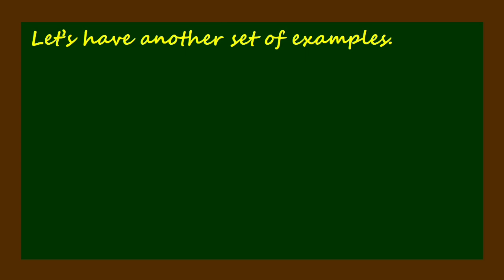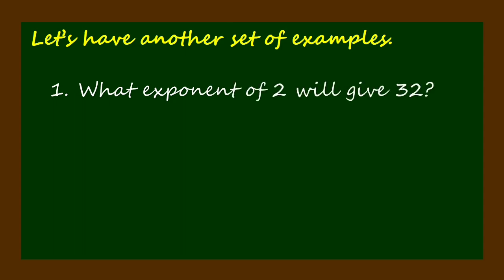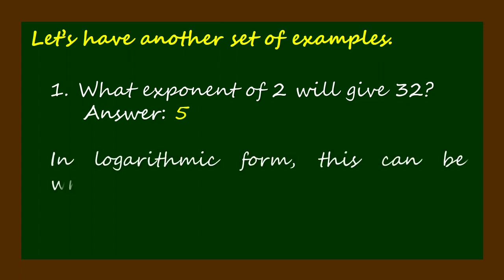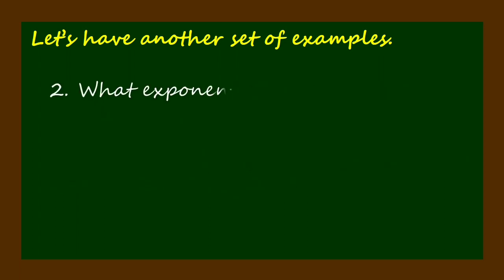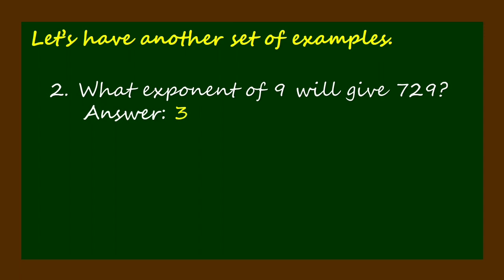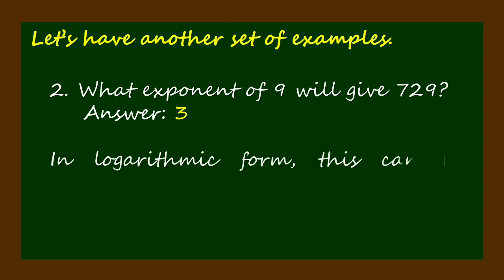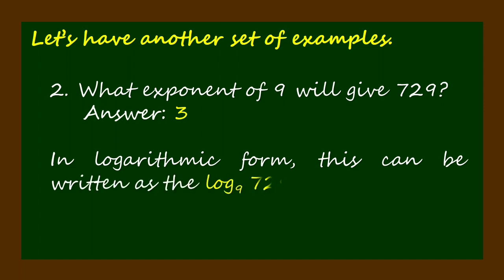Let's have another set of examples. What exponent of 2 will give 32? Answer: 5. In logarithmic form, this can be written as the logarithm of 32 to the base 2 equals 5. What exponent of 9 will give 729? Answer: 3. In logarithmic form, this can be written as the logarithm of 729 to the base 9 equals 3.